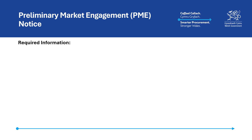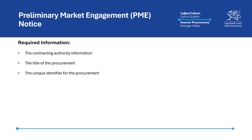The following information must be included when publishing a Preliminary Market Engagement Notice, though please note that authorities should refer directly to the regulations and associated guidance, as this information is only being provided as a general guide to the notice requirements. The required information includes information about the contracting authority, the title of the procurement, the unique identifier relating to the procurement, and information relating to the subject matter of the contract.